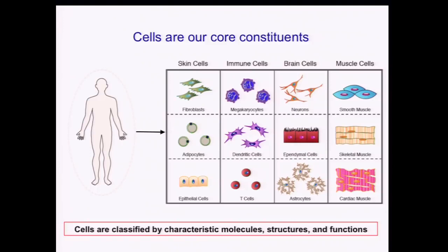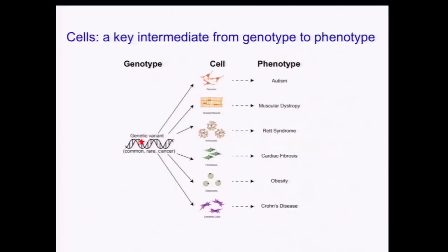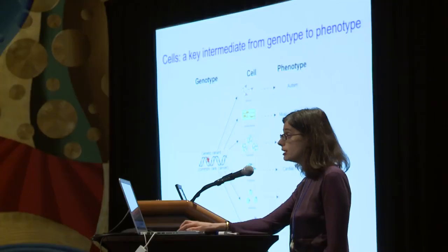Based on this, for example, we might distinguish in the immune system dendritic cells — a first line of defense — from T cells in adaptive immunity. We can distinguish neurons from glial cells like astrocytes. Cells are also a key intermediate between the genotype and the phenotypes we care about. A genetic variant manifesting in immune dendritic cells could increase the risk of Crohn's disease, while another manifesting in skeletal muscle cells could result in muscular dystrophy.